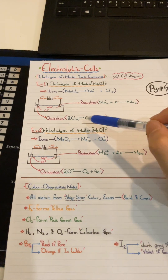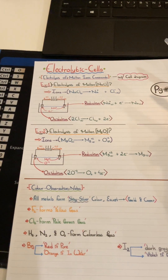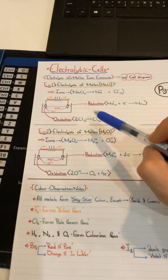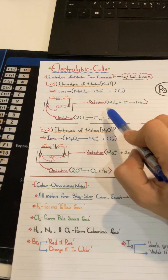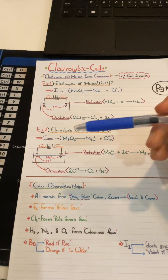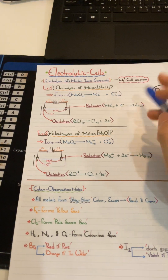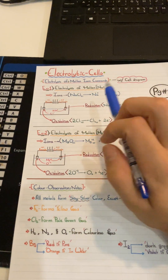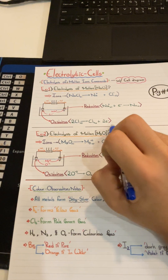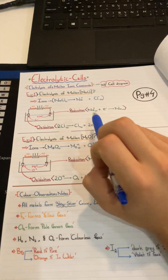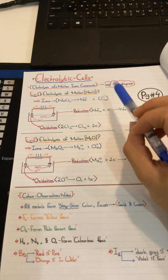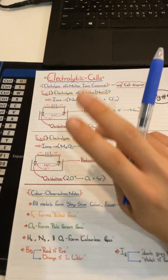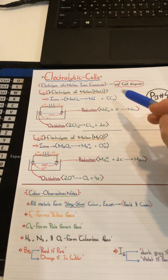Chlorine is the negative ion — it goes to the anode where oxidation occurs. Write the ion and the number of electrons lost on the product side. Chlorine has a charge of −1 and is a diatomic element, so two chlorine atoms are present. Each atom loses one electron, giving two electrons total: 2Cl⁻ → Cl₂ + 2e⁻. Remember, for diatomic elements, even if the charge is −1, it still involves two electrons because two atoms are present.